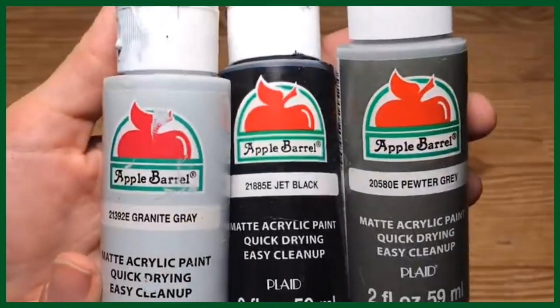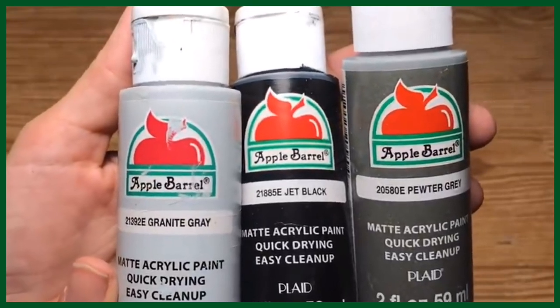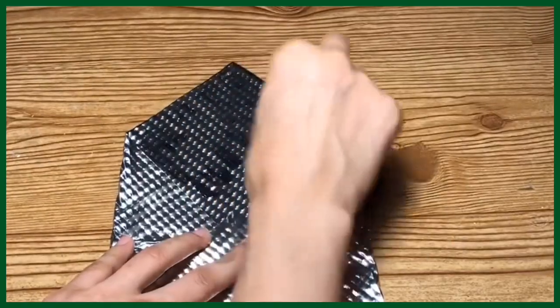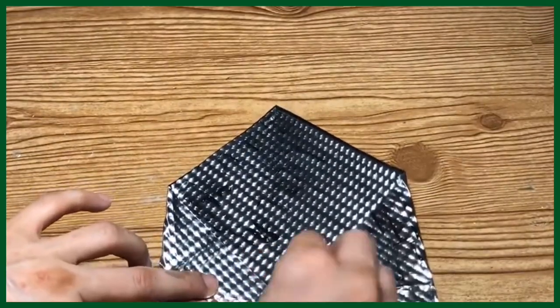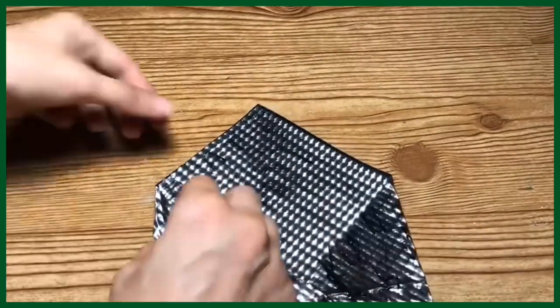Then taking the granite gray, jet black, and pewter gray, I'm going to first dab on a layer of the black paint using a makeup sponge and I'm just going to dab it all over.